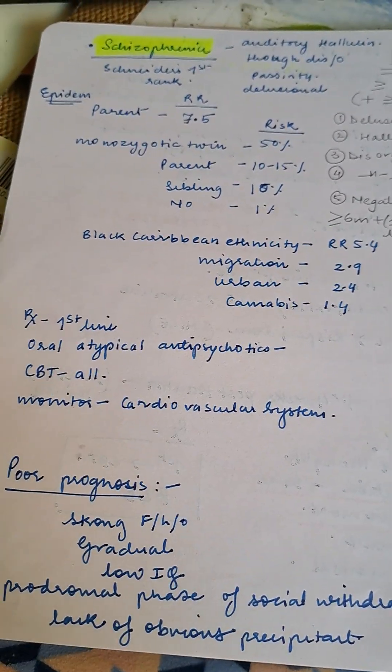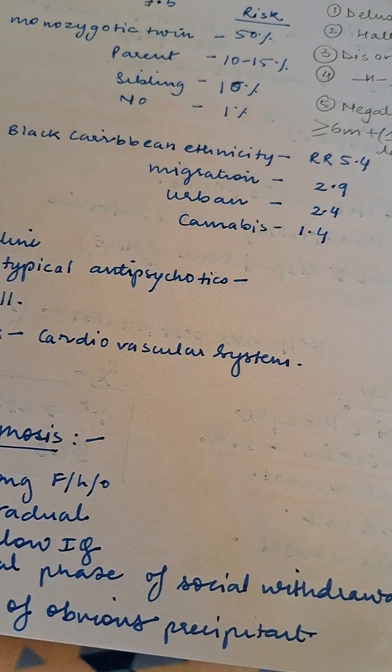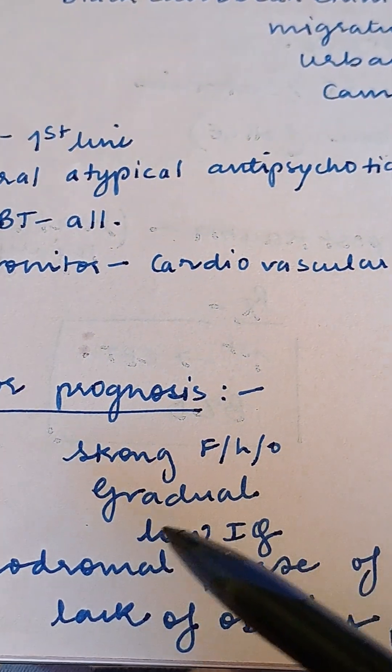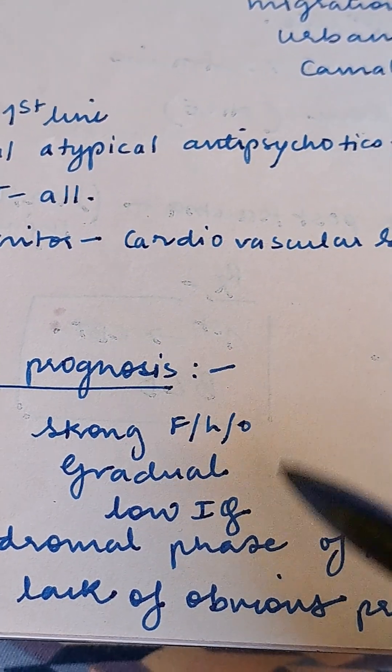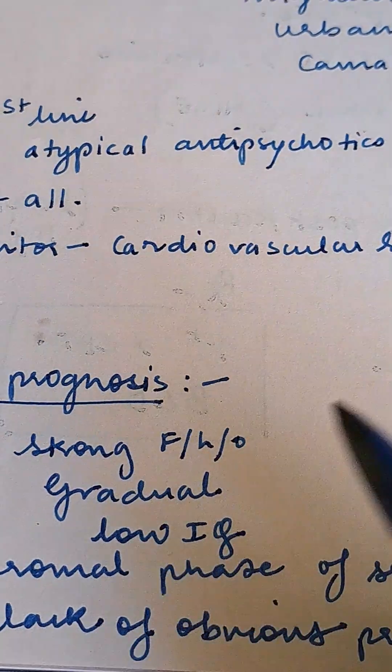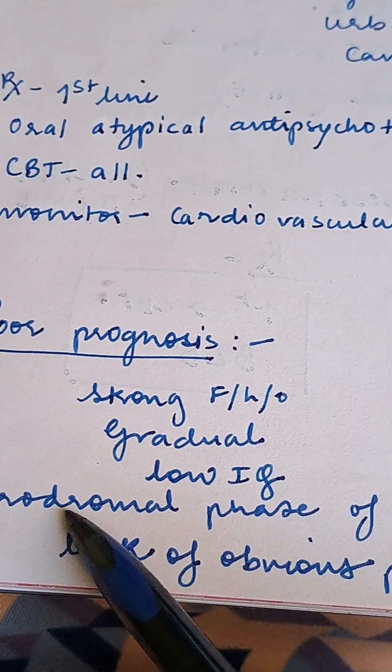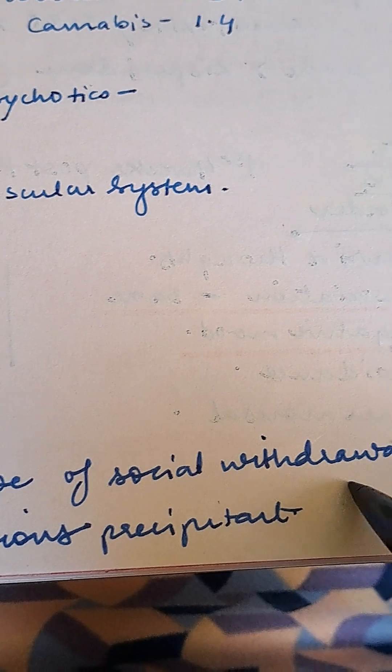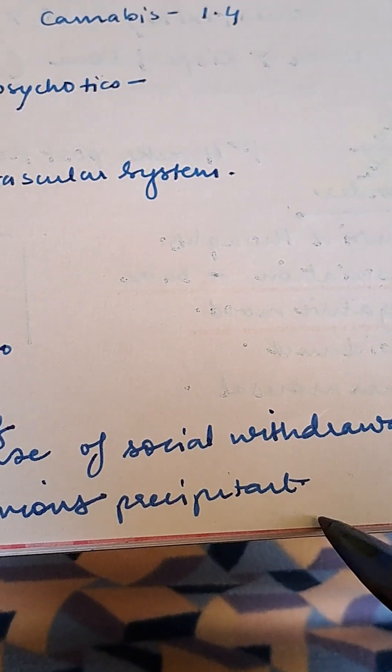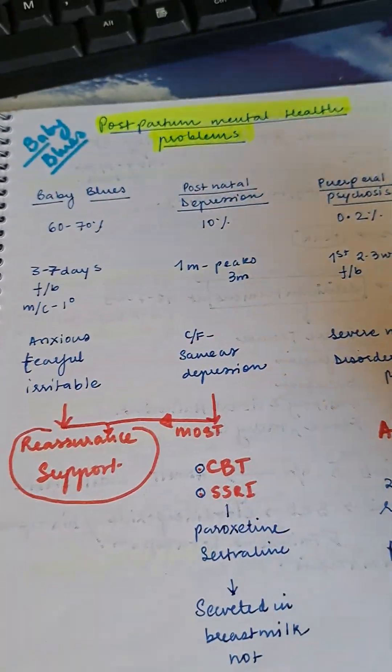Poor prognosis in schizophrenia: strong family history, gradual disease progression, low IQ, prodromal phase of social withdrawal, and lack of obvious precipitants. All these lead to poor prognosis.